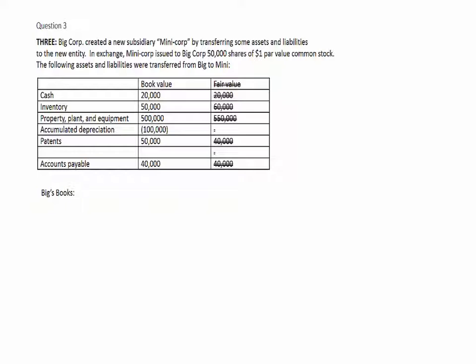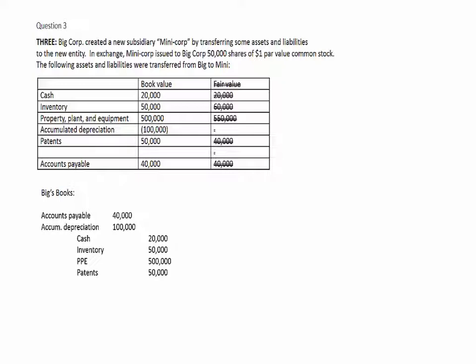On Big's books, they're going to go ahead and get rid of all of the assets — the cash, the inventory, the property, plant and equipment cost, and the patents off their balance sheet. They take off the credit balance accounts, the accounts payable and the accumulated depreciation. And what do they receive in exchange? They receive 50,000 shares.